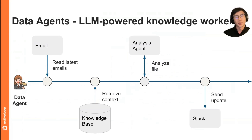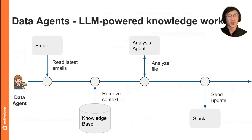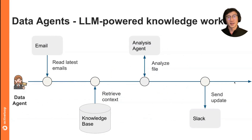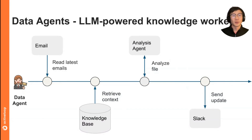Data agents are LM-powered knowledge workers. What a data agent does is act as an automated entity that can act upon a set of tools and reason about how to use those tools to achieve a goal. The key thing is that this is an abstraction that can be applied as a layer on top of an existing RAG pipeline. A data agent can have access to your knowledge base through a RAG pipeline as one tool, but also an email client and a Slack client.